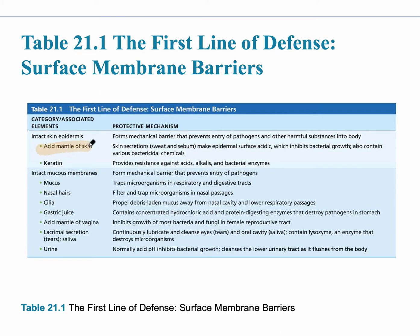The acid mantle of the skin prevents and inhibits bacterial growth due to its pH. Keratin is the tough protein in the skin. Mucous membranes are the wet membranes where mucous substance is produced, and it traps microorganisms in the respiratory and digestive tracts. Other examples include nasal hair, cilia, gastric juice, the acidic pH of the vagina that prevents bacterial growth, lacrimal secretions or tears, saliva, and urine.